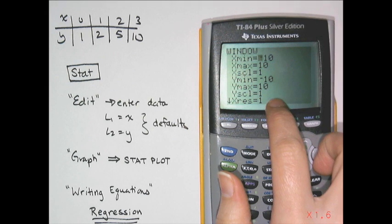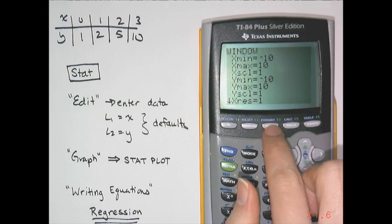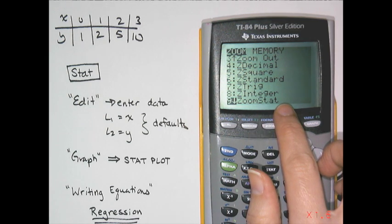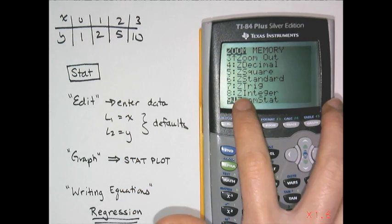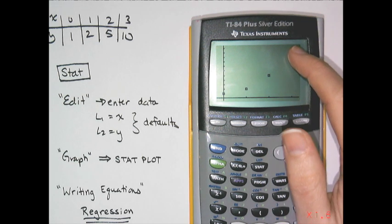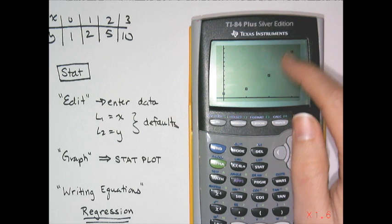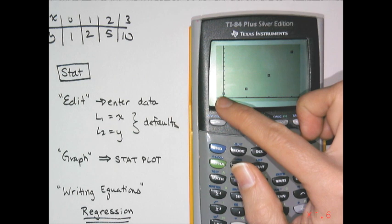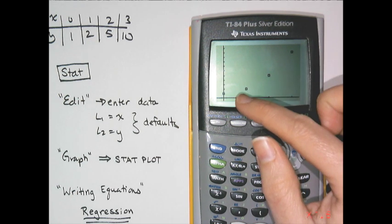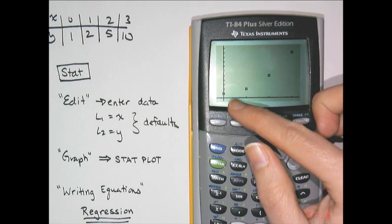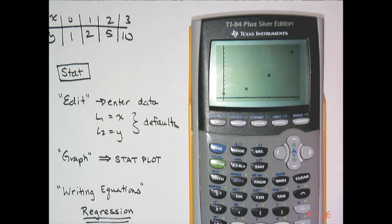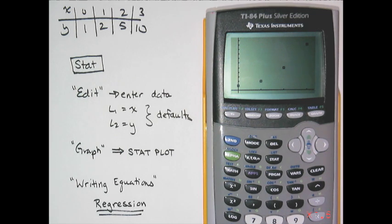I can manually change the window, but the calculator has a special feature: Zoom Statistics. Press Zoom and scroll down to find Zoom Stat. It automatically changes the window to optimize the view of your data. Pressing Enter graphs the data, and I can see it's not linear — it curves upward, meaning it's either exponential or quadratic. I can also figure out a potential equation and graph it alongside the data to see how well it fits. Instead of writing the equation by hand, I'll show you something called a regression.